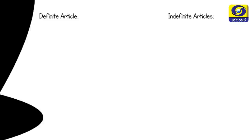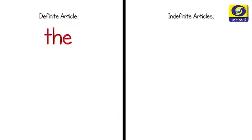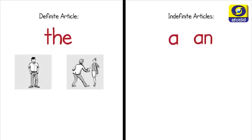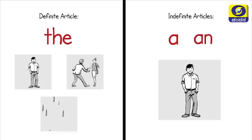Let's review the articles themselves. There are only three: the, a, and an. The definite article 'the' can be used with either singular, plural, or uncountable nouns. While the indefinite articles 'a' and 'an' can be used only with singular countable nouns. When deciding which article to use, look at each noun in your sentence and ask yourself three questions: one, is the noun countable or uncountable? Two, if it is countable, is the noun singular or plural? Three, is the noun definite or indefinite?